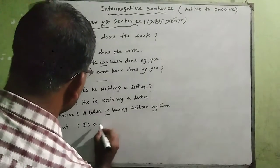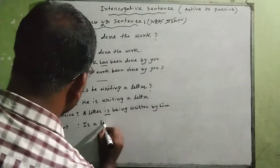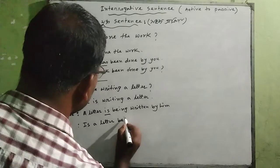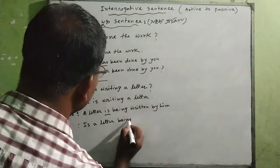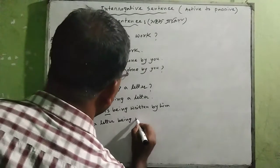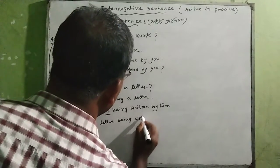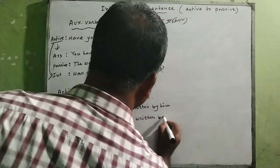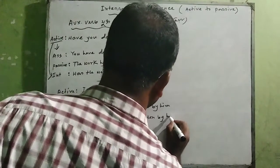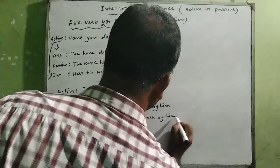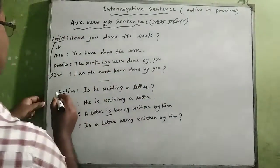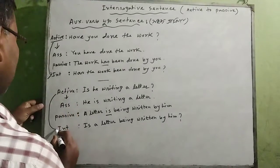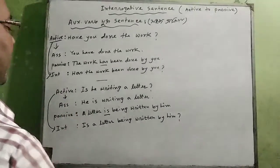...by him? A letter — a letter being written by him. So the passive voice form is: 'Is a letter being written by him?' This completes the active to passive transformation for this interrogative sentence.